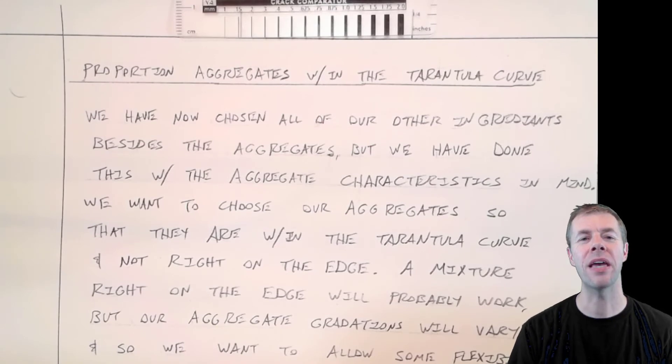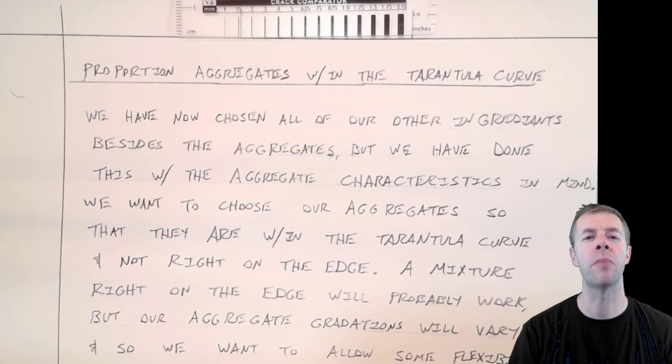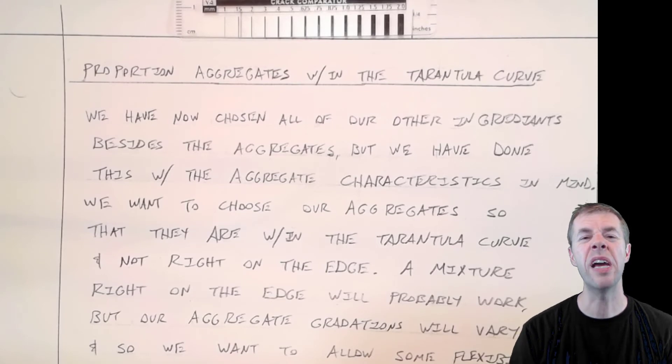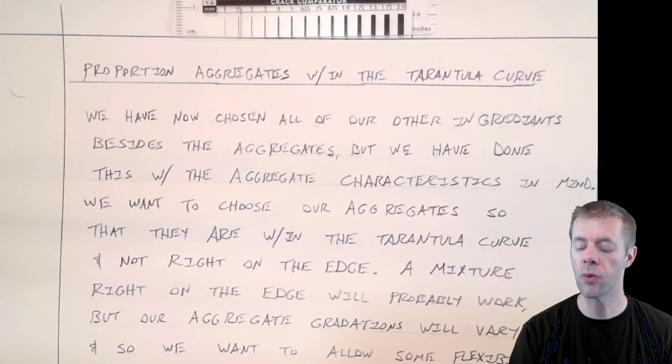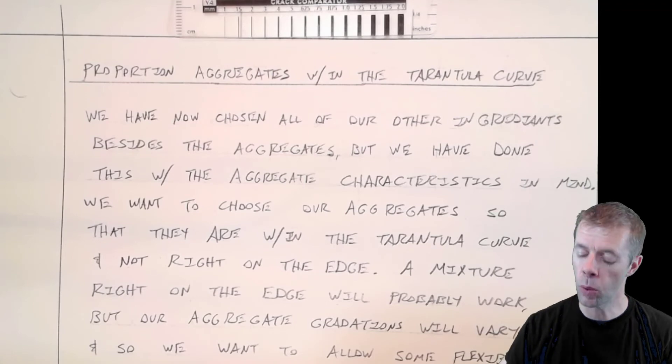Alright, now we're getting to the guts. The real thing that makes this mixture design procedure special. Proportioning the aggregate. When you proportion the aggregate with the Tarantula Curve, you do all of it at once. You do the fine, any intermediate, any coarse, all at the same time. It's a combined gradation. And you make it to be within this curve that we've been talking about. So, we've chosen all the other ingredients besides the aggregates, and we've made all of our choices based on the true aggregate characteristics. That's going to be really helpful for us. We want to choose our aggregates so that they're within the Tarantula Curve. And we don't want them right on the edge. We don't. We want them to be a little bit away from the edge.